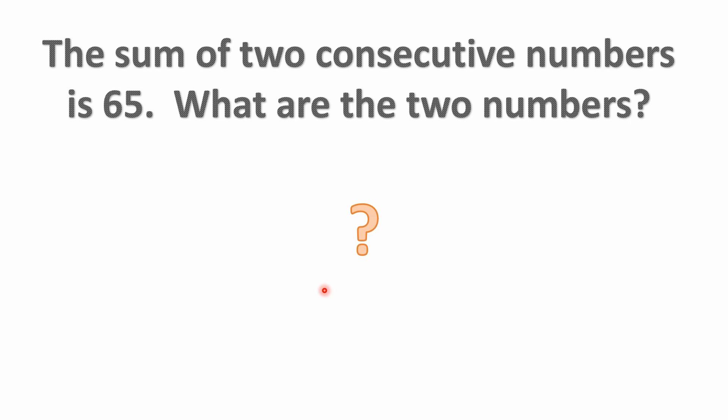All right, so what does that mean, consecutive? That means one number after another, right? So in other words, if you're starting out with the number one, then the next consecutive number would be two. So one and two are consecutive, five and six are consecutive, nine and ten are consecutive.